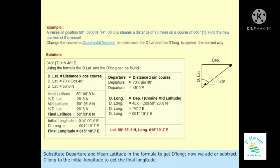Substitute departure and mean latitude in the formula to get DLong. Now we add or subtract DLong to the initial longitude to get the final longitude.